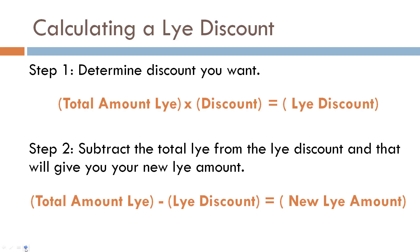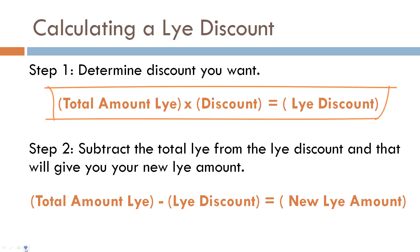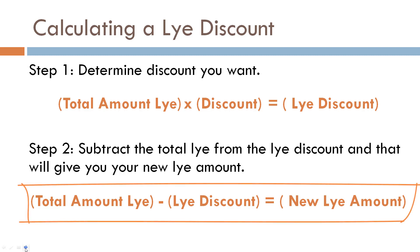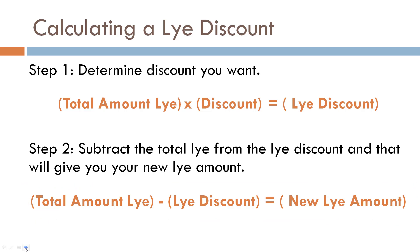So how do we determine the lye discount? It's pretty simple — two steps. First, go back to where we found the total amount of lye and multiply that by the discount percentage you want. That tells you how much lye to remove from your recipe. Second, take the total amount of lye and subtract the lye discount you just found, and that gives you your new lye amount. Multiply total lye by the discount to get the discount amount, then subtract that from the total lye to get your new lye amount.